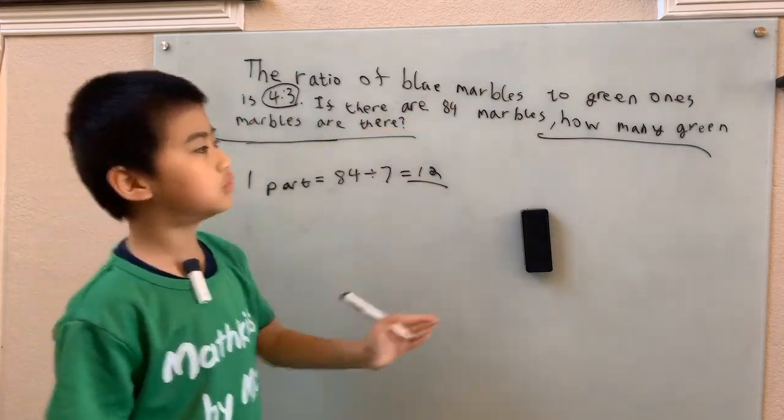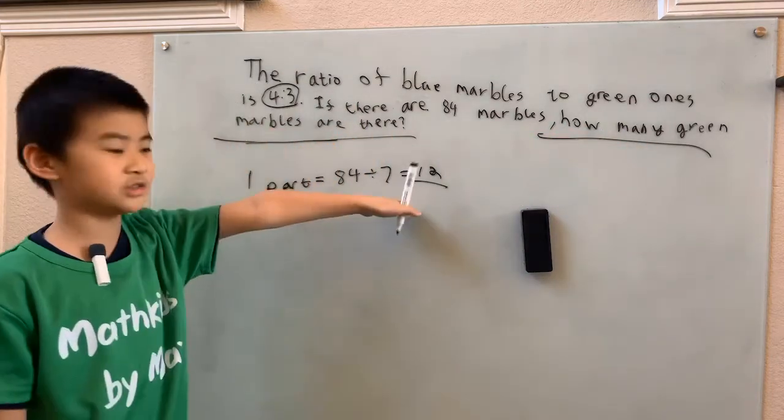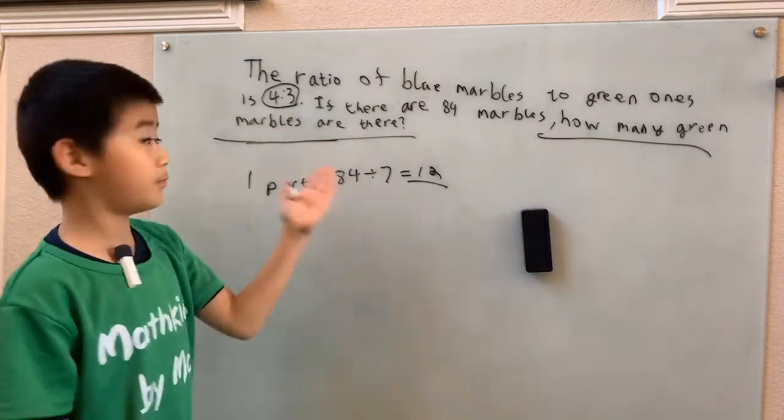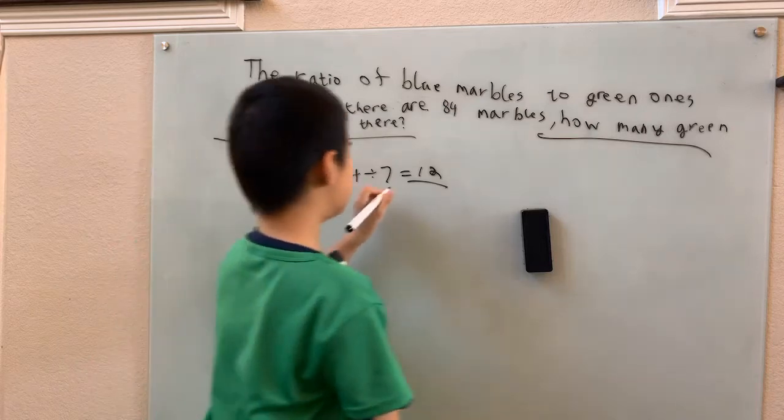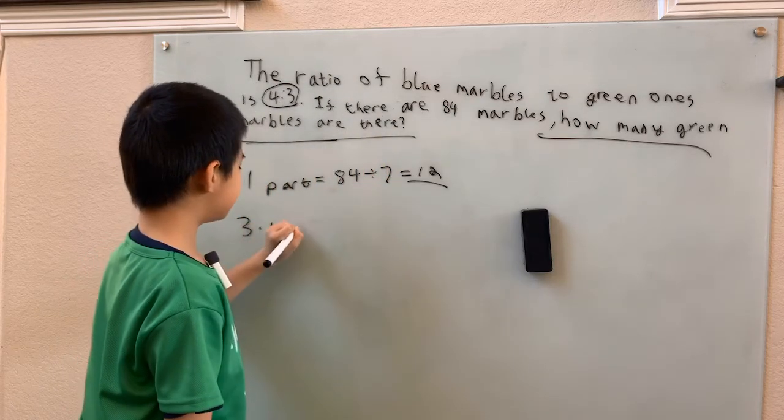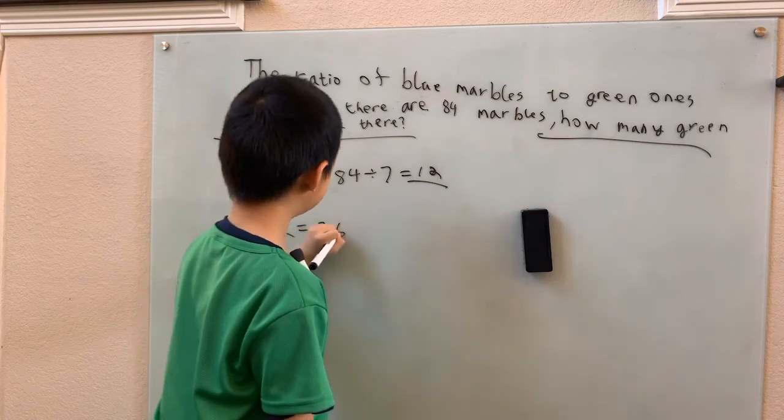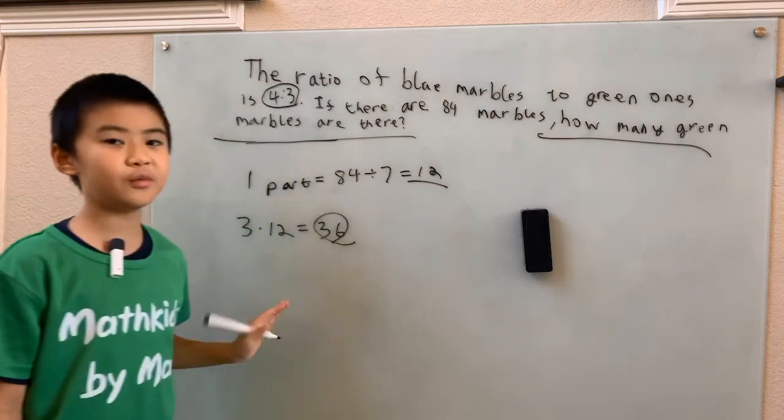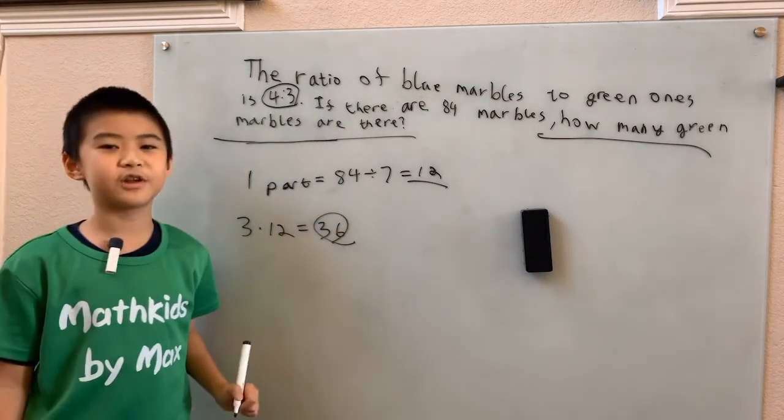So again, read the question. You want how many green marbles, not how many marbles are in one part. We just multiply this by three. Three times 12, which is 36. Did the same problem two different ways. Got the same answer. We're pretty sure we were right.